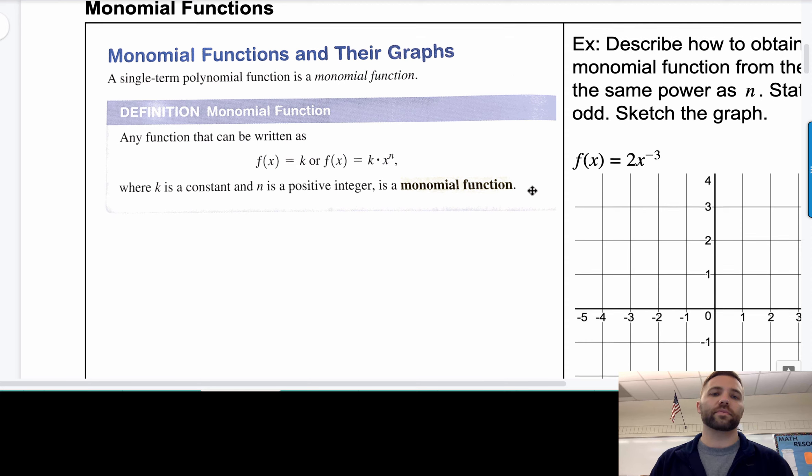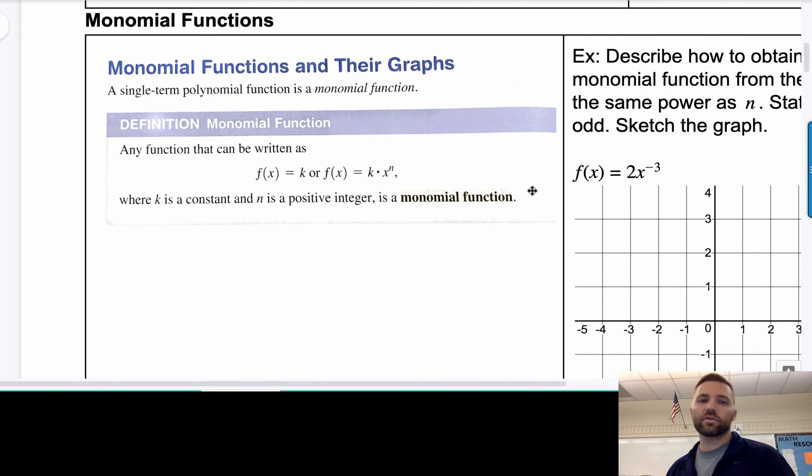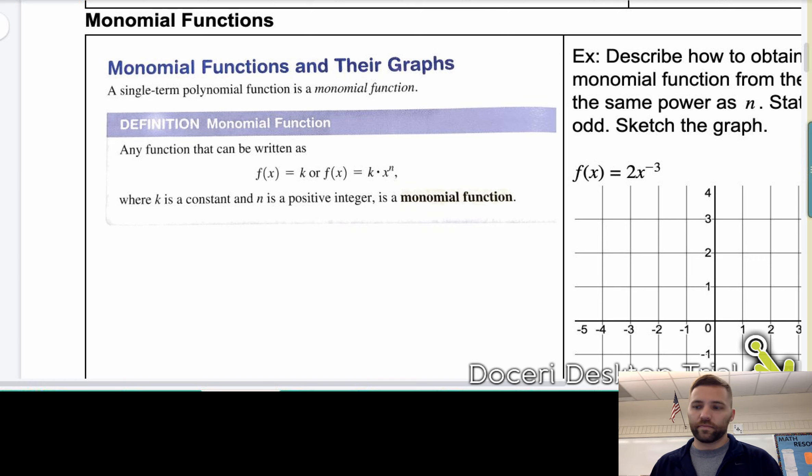Monomial functions and their graphs. So a single-term polynomial function is called a monomial function. What is important about monomial functions is that, well, a couple things. One, they look really similar to power functions. In fact, they are a type of power function. But the key thing here is that n is a positive integer. Okay. So n is going to be to the 1, 2, 3, 4, 50th, 60th, whatever power. All right. That makes it a monomial function.